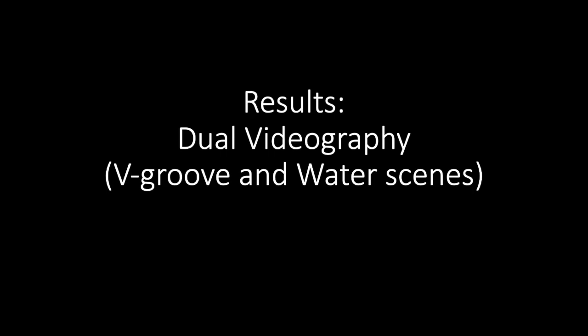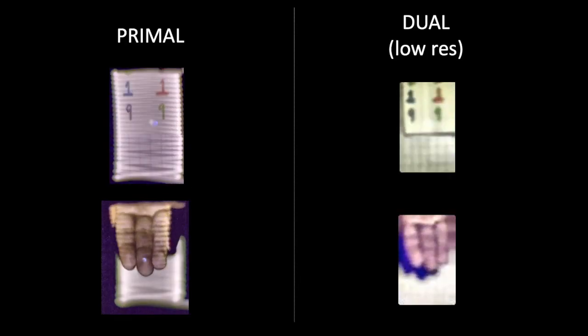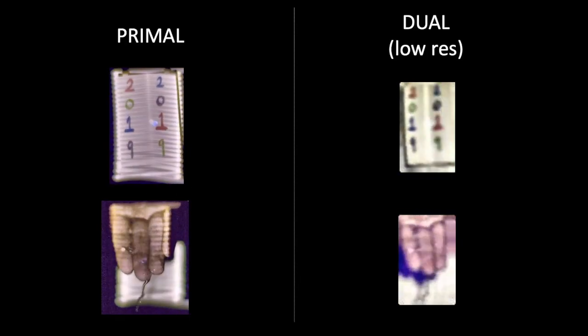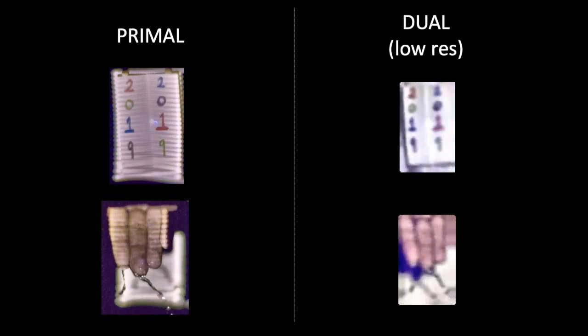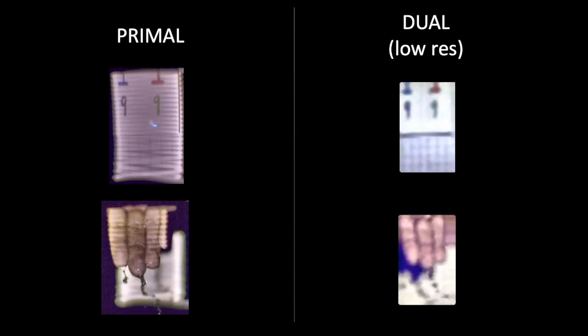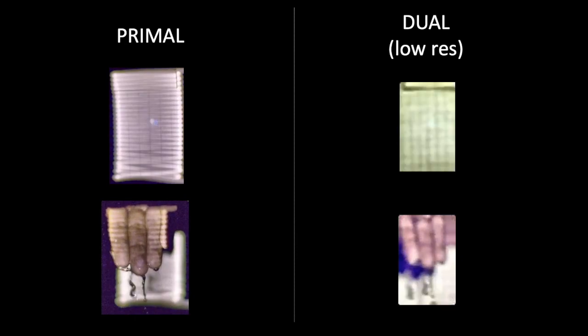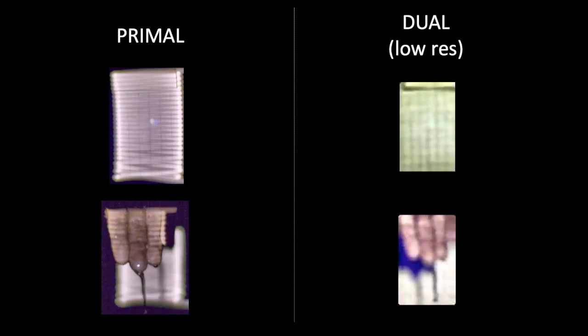We are also able to render dual videos of the scene. Unlike previous work, we are able to render dual videos without epipolar constraints. Here we show dual views of the v-groove and water scene. While the resolution of the dual videos matches the low resolution of our projector, note that the shadows of the v-groove and the droplets of water are well matched and swapped, as expected in dual imagery. Thanks for listening!